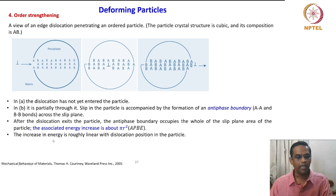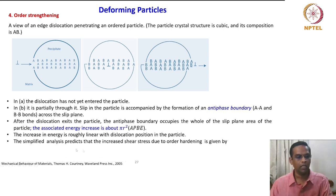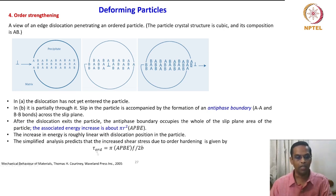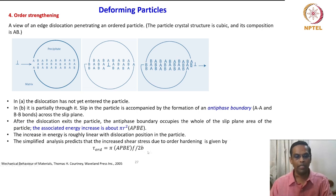Why is it important? After the dislocation exits the particle, the antiphase boundary occupies the whole slip plane area of the particle. The associated energy increase is about π r², that is, antiphase boundary energy. The energy of the system is raised, so this interface will have higher energy. The increase in energy is roughly linear with dislocation position in the particle. The simplified analysis predicts that the increased shear stress due to order hardening is: τ_ordering = π × APBE × f divided by 2b.